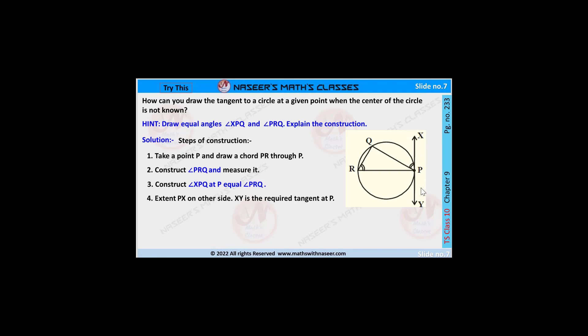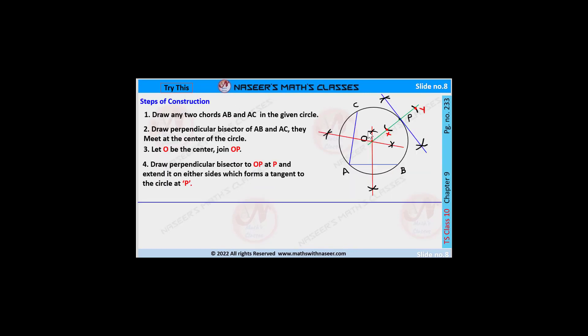Draw a circle with the help of an angle. We do not have any center to it. Next, take two chords AB and AC. Draw perpendicular bisector of AB and perpendicular bisector of AC. They intersect at point O which is the center of the circle.